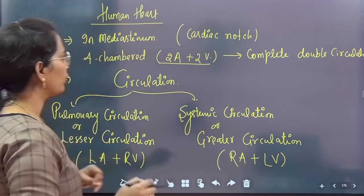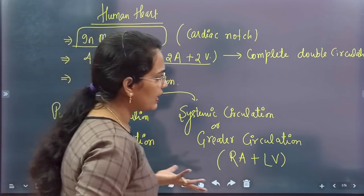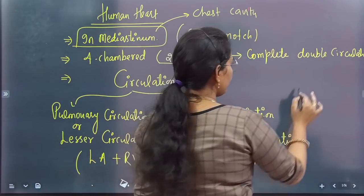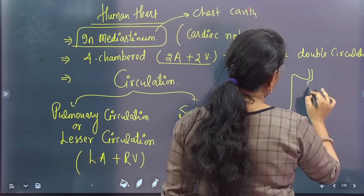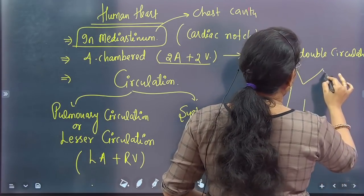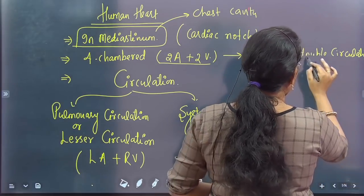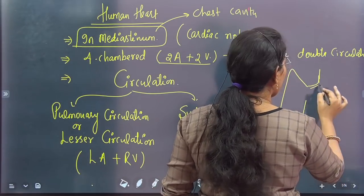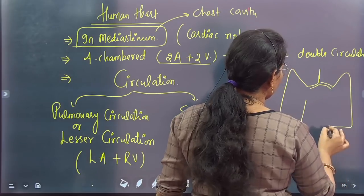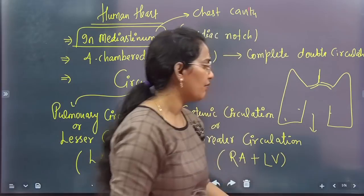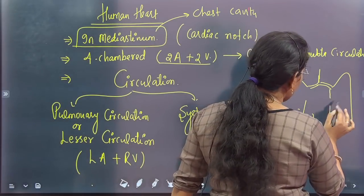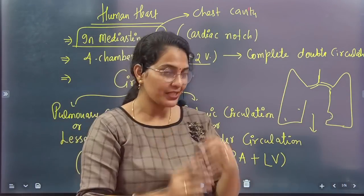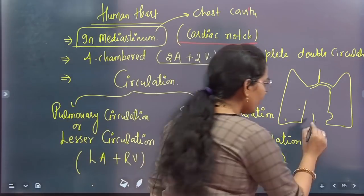If I talk about the human heart, then where is the heart located? Mediastinum. Mediastinum is called the chest cavity. Where is the chest cavity? Our right lung and our left lung — the space between them is called the chest cavity or mediastinal cavity. And remember, the left lung has a small notch structure — a depression. It is called the cardiac notch, and our heart fits into it.